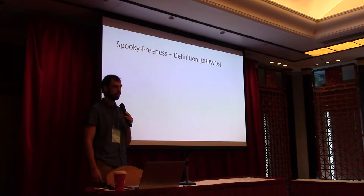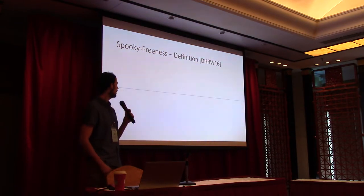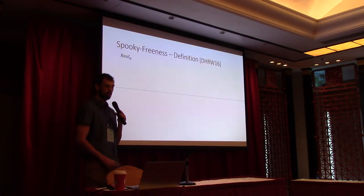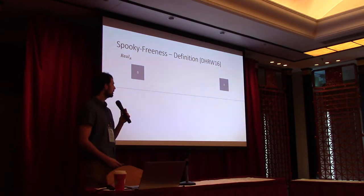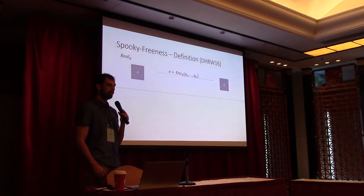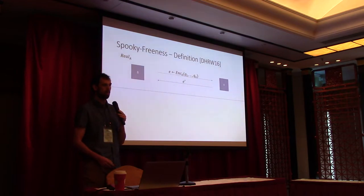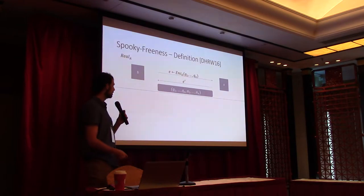Here is the formal definition of spooky-freeness. We define it using two experiments. The first, the real experiment, has a parameter A and goes like this: Bob communicates with the adversary, first samples the key and sends to the adversary an encoding of the queries. Then the adversary can tamper with the encoding and generate some evaluated encoding. Finally, the result of this experiment is the queries, both encoded and then decoded as answers.